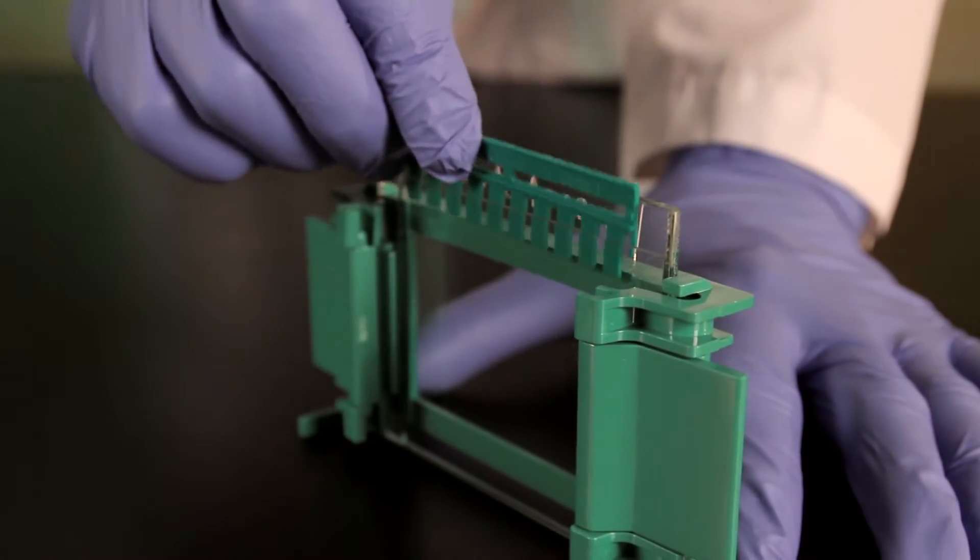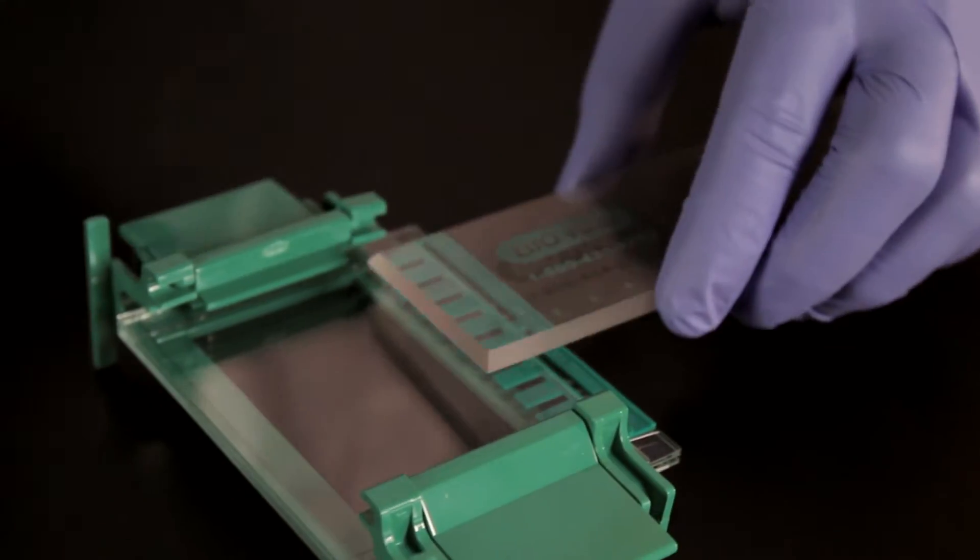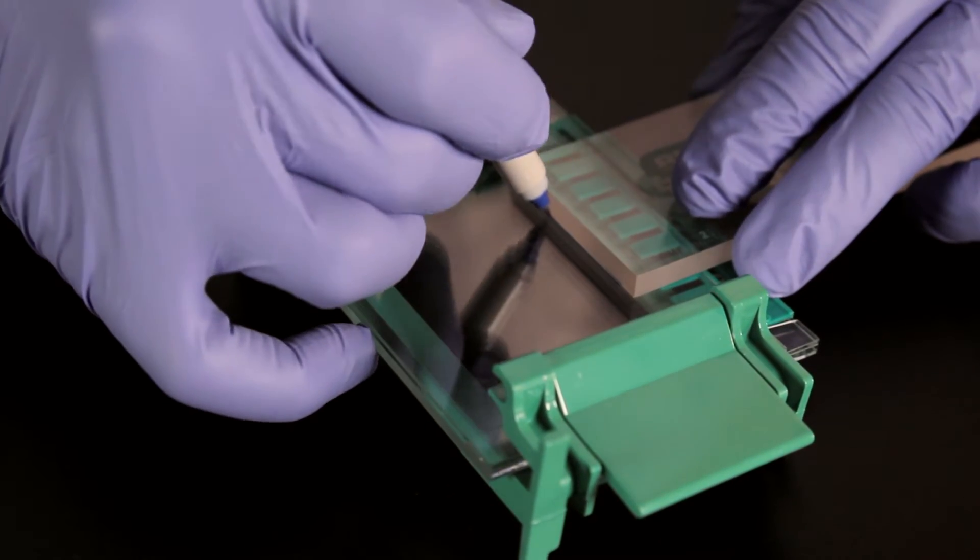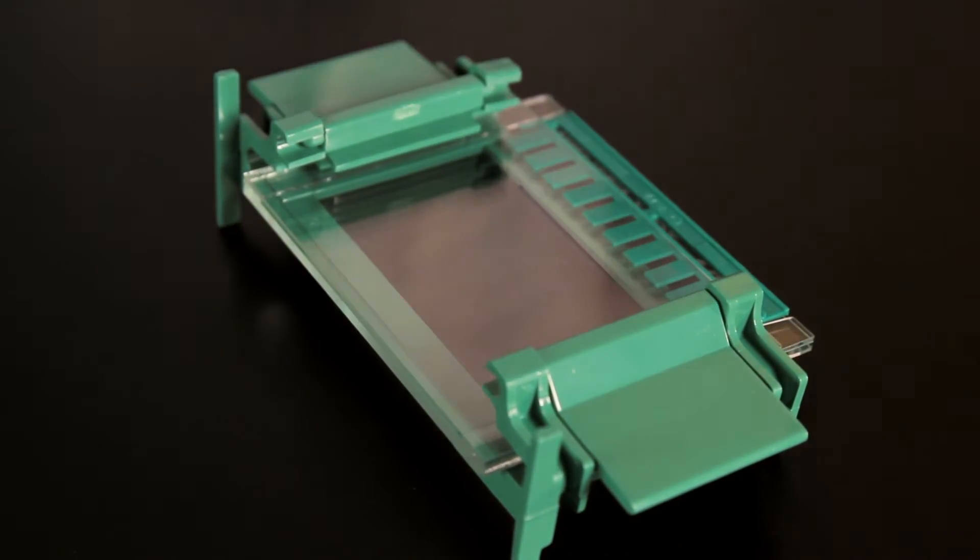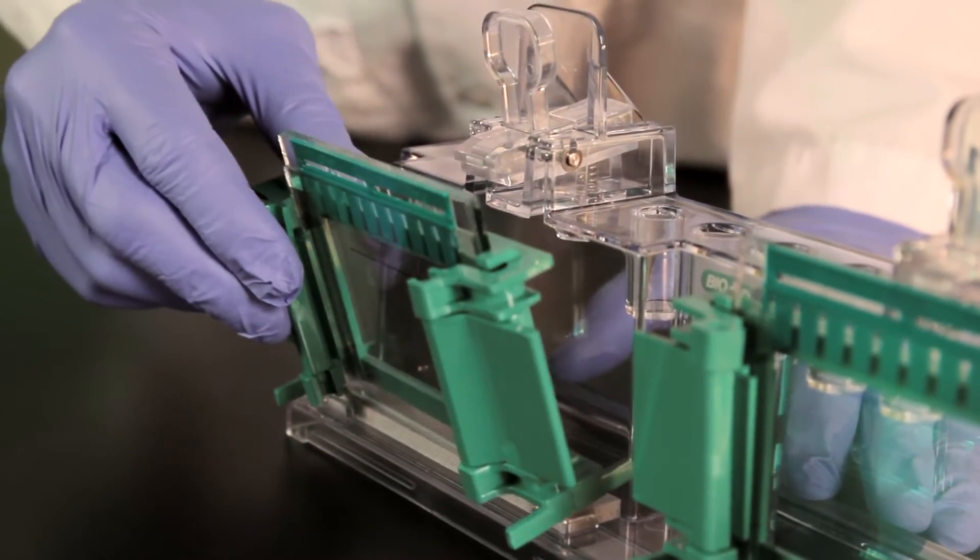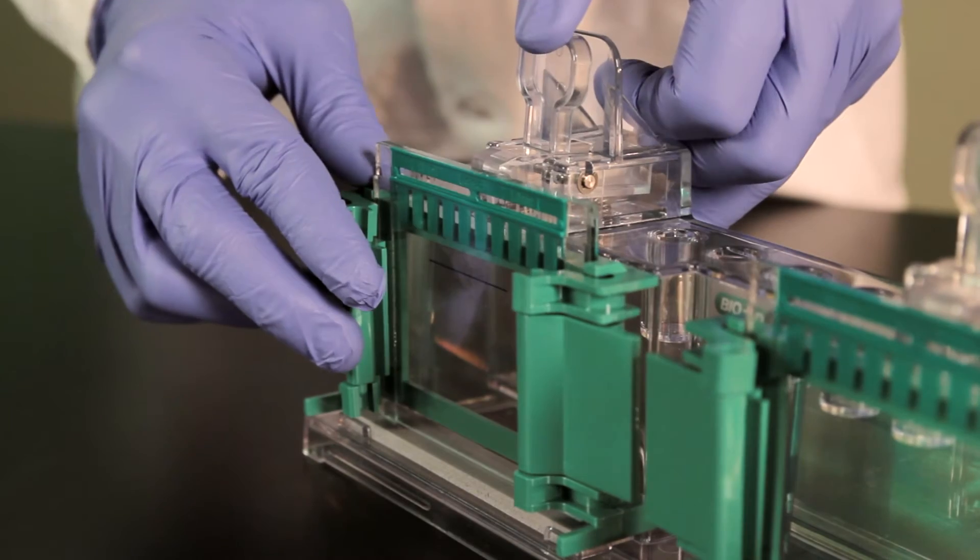Place the comb completely into the assembled gel cassette and mark the glass plate five millimeters below the teeth of the comb to indicate the level to which you will pour the resolving gel. Make sure the gel casting stand and gaskets are clean and dry and place the casting frame into the casting stand.